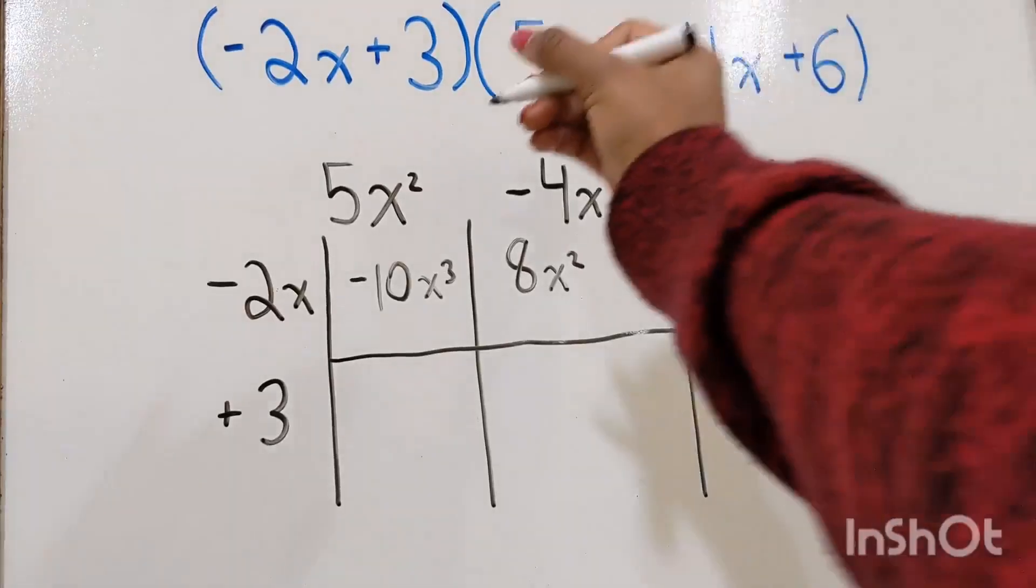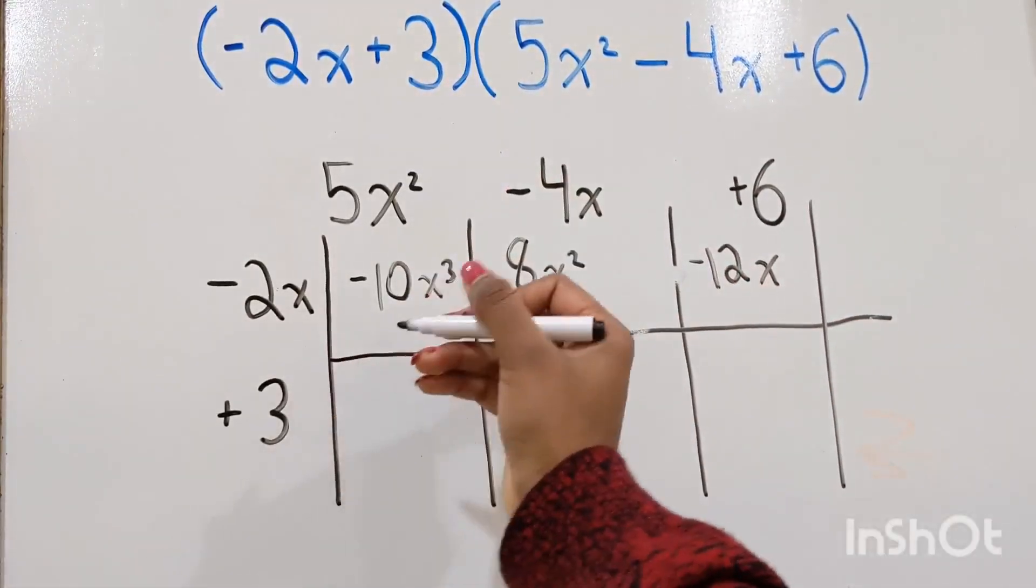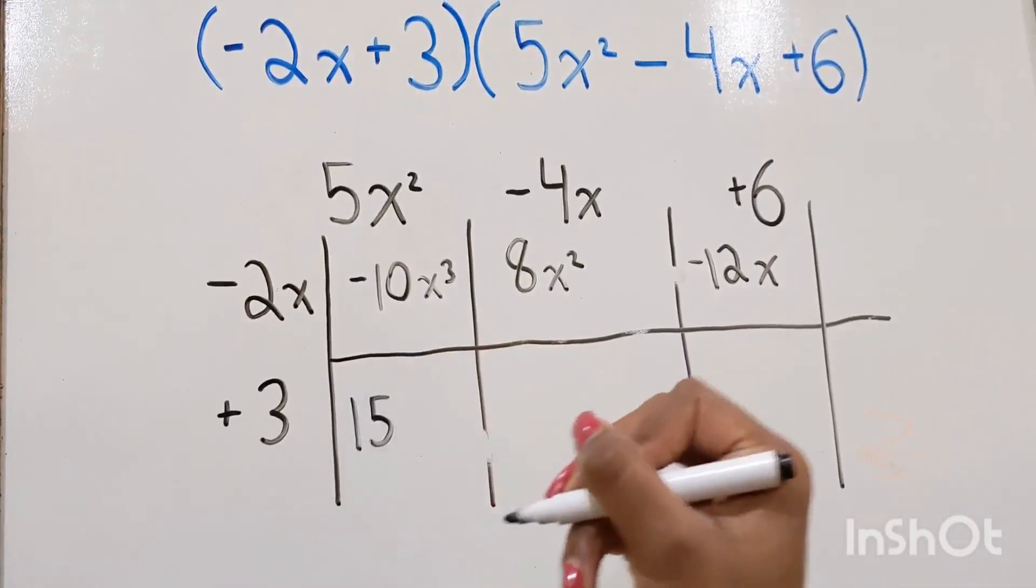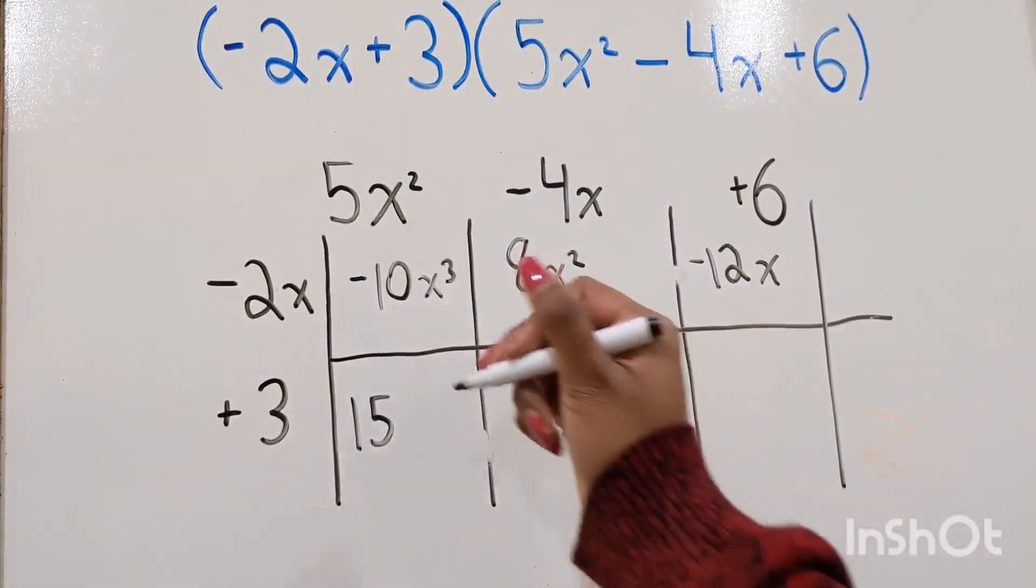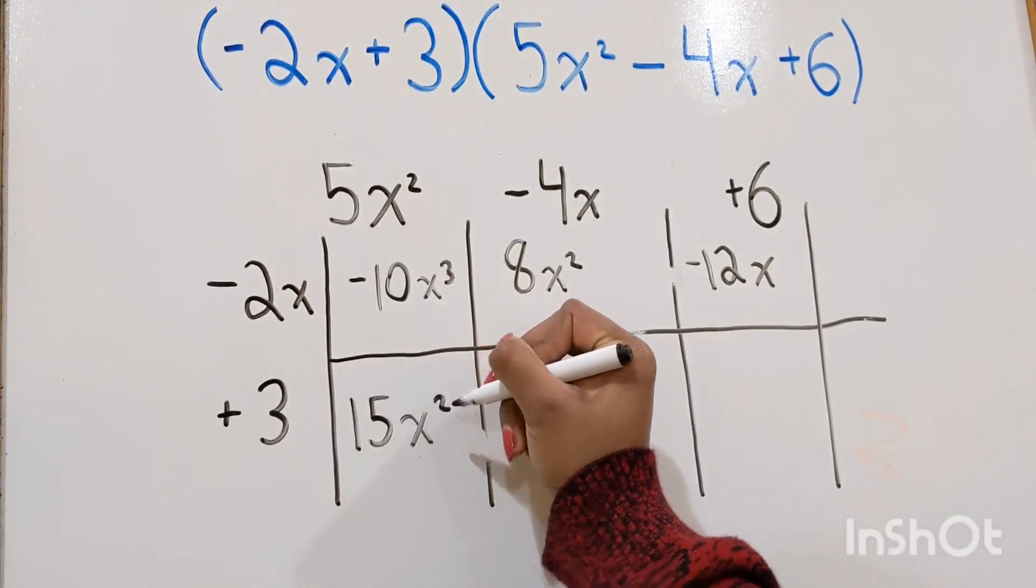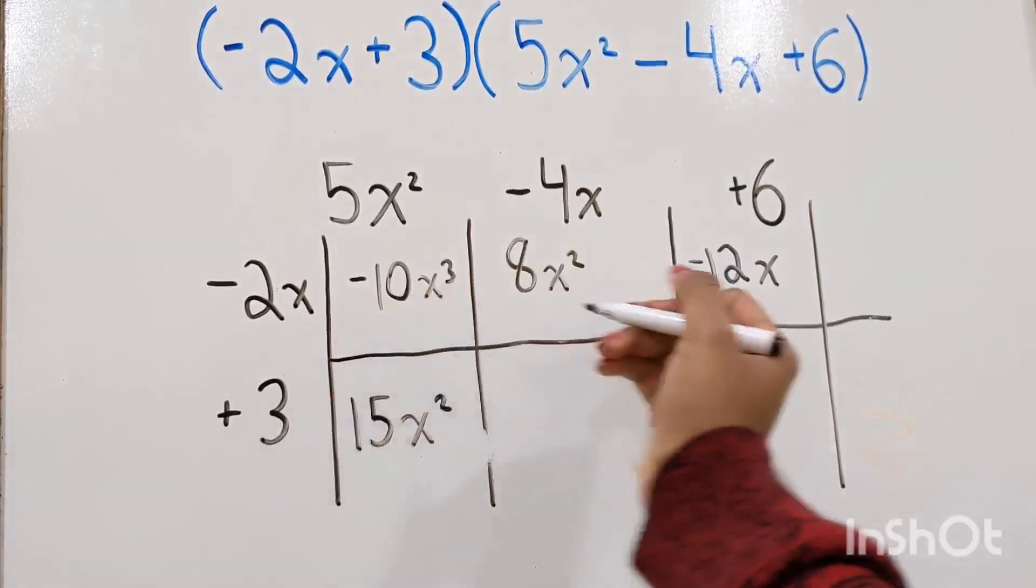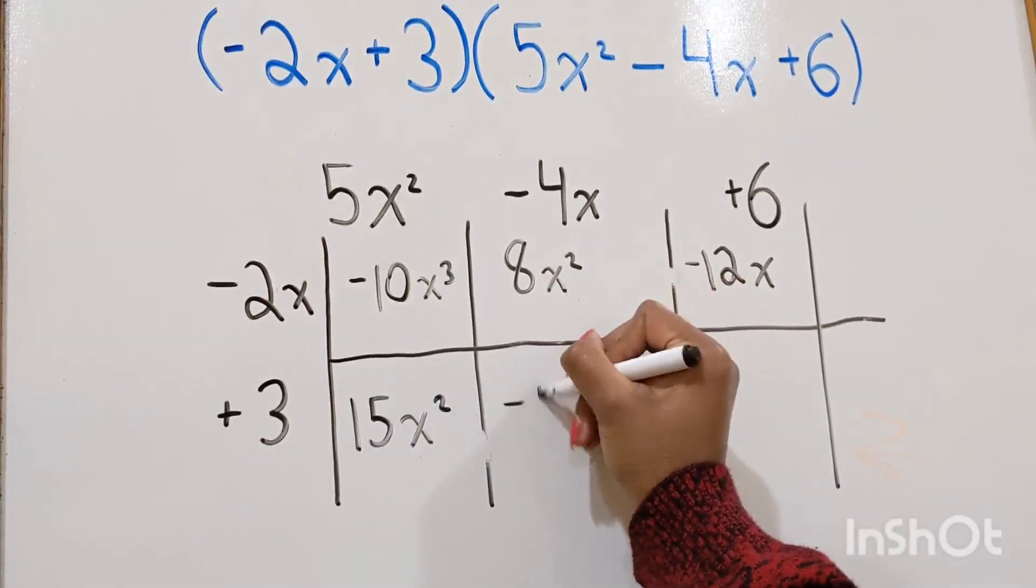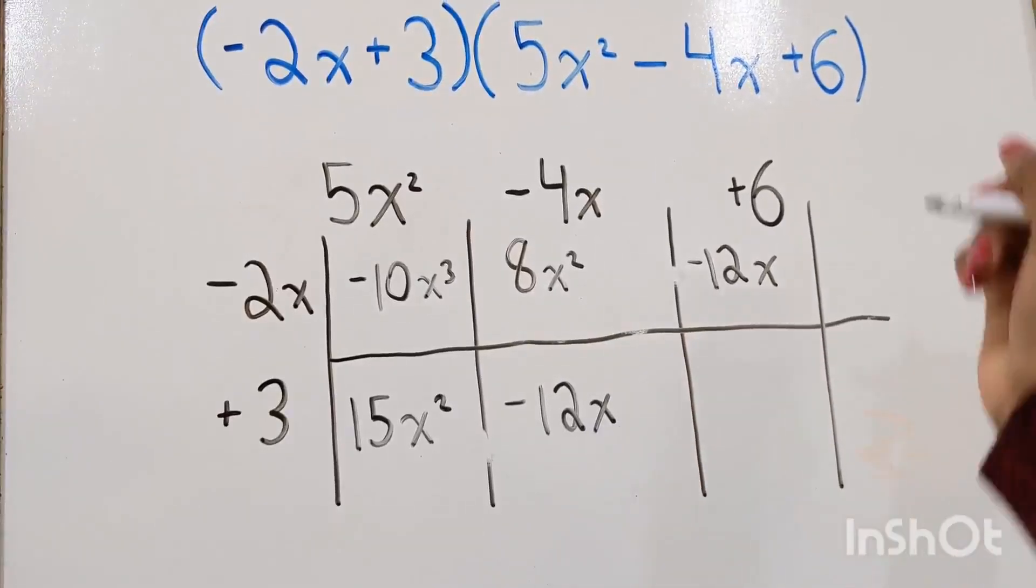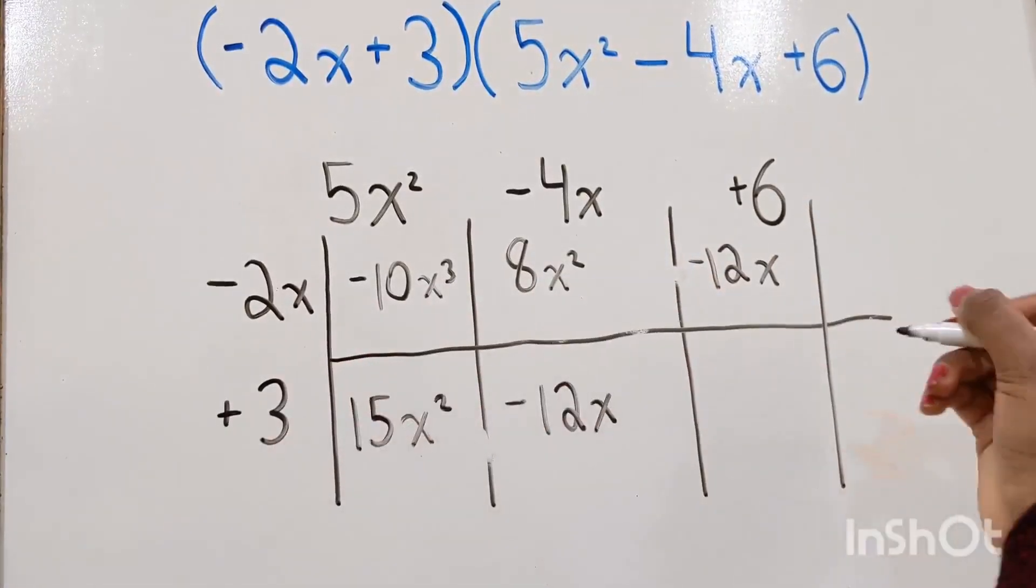And then you would do 5x squared times 3. So 15x squared. And then negative 4x times 3 is negative 12x. And then 6 times 3 is 18.